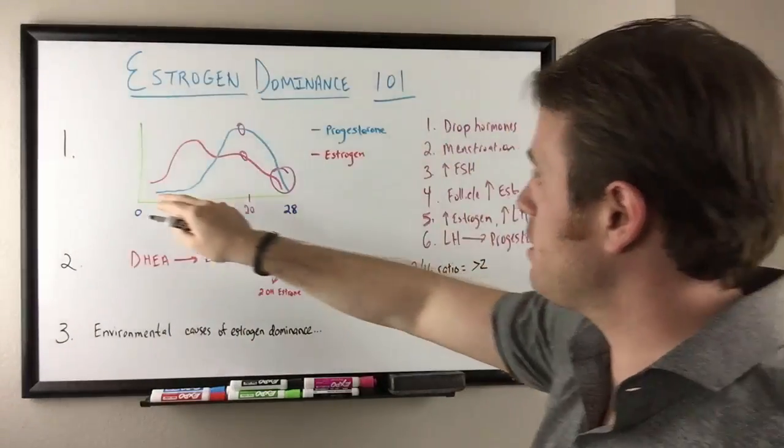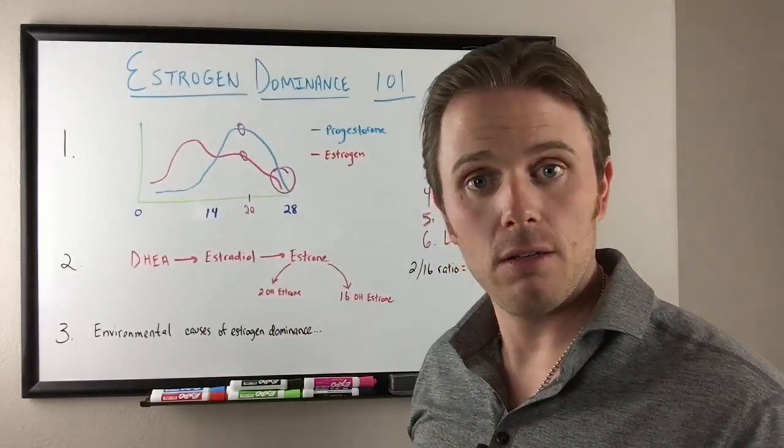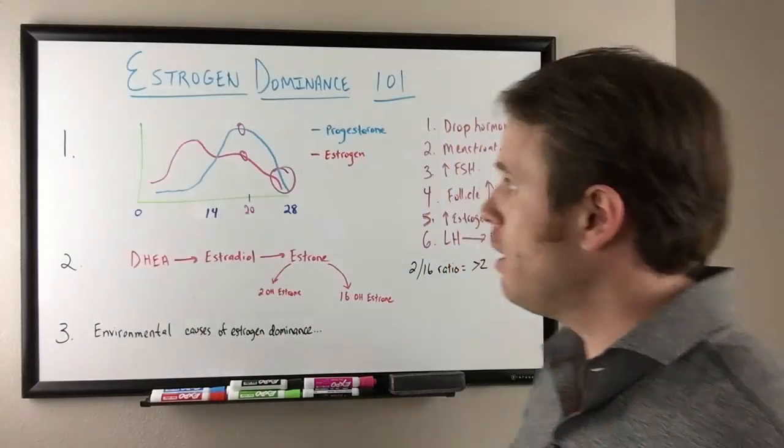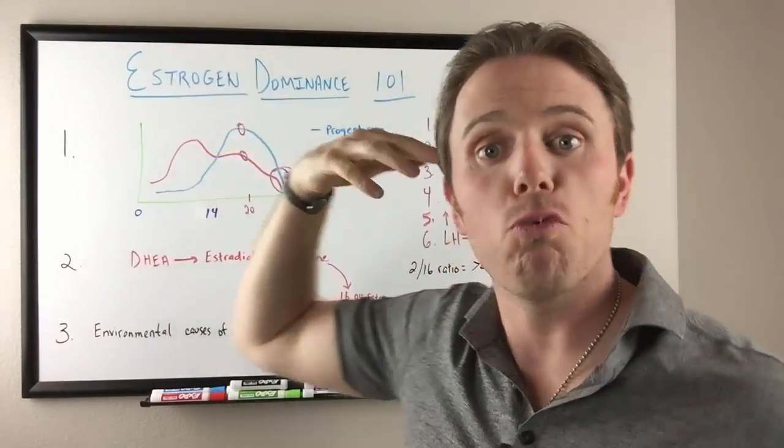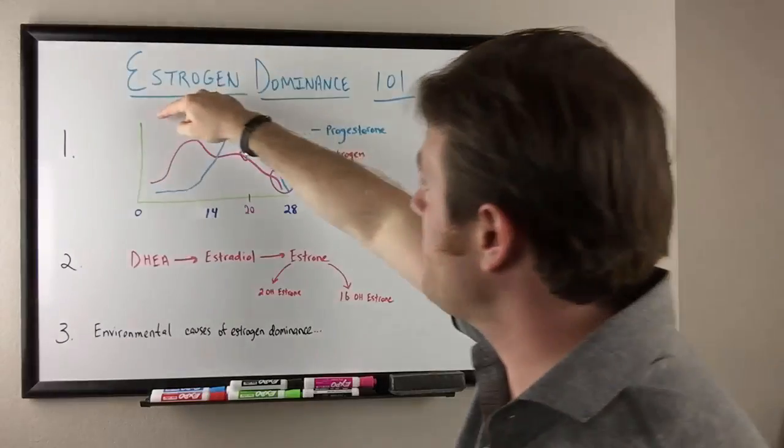So let me walk you through here. We have basically this drop in hormones that then signals bleeding. When menstruates, that's the period. Over here, FSH is a brain hormone so you don't see it on this graph. It's happening in the brain. FSH increases.